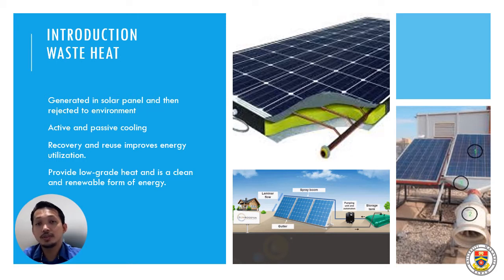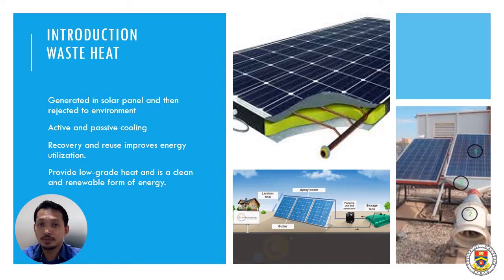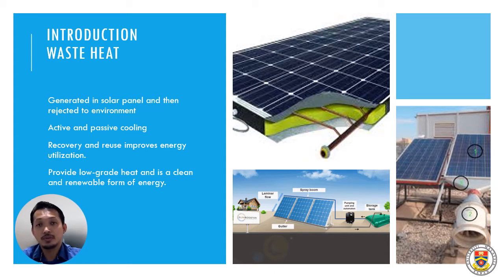Passive cooling is basically where the system does not require any mechanical means — we just use natural convection, for example. Whereas active cooling uses mechanical works, for example, we use a water pump to spray water on the surface to reduce the temperature of the solar PV, or we use mechanical blowers to blow air to the surface so that the surface temperature of the solar PV is reduced.